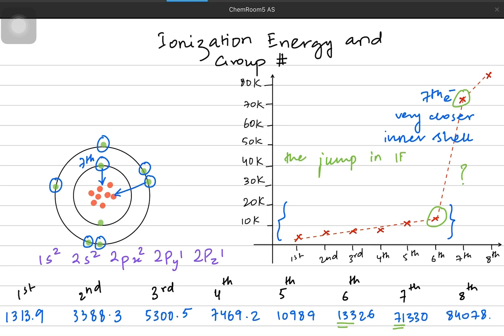But the seventh electron comes from the inner shell. The jump in ionization energy values indicates the group number. You have a jump after the sixth value. It means that first six electrons were from the outer shell, while the seventh was from inner shell, so group six.